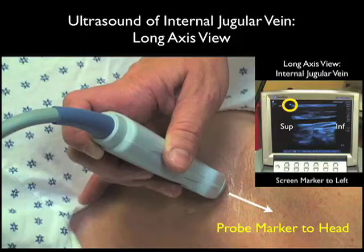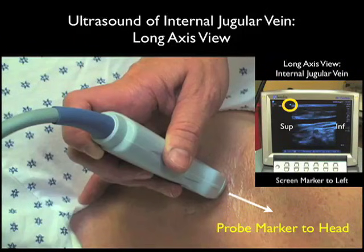Therefore I know where it lines up on the ultrasound screen. Notice here that, as the screen indicator dot is towards the left, superior on the internal jugular vein will be located towards the left of the screen, and inferior will be located towards the right of the screen.